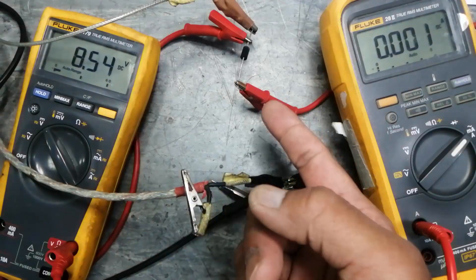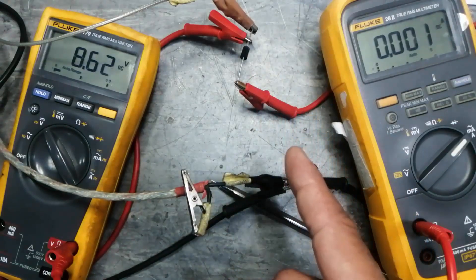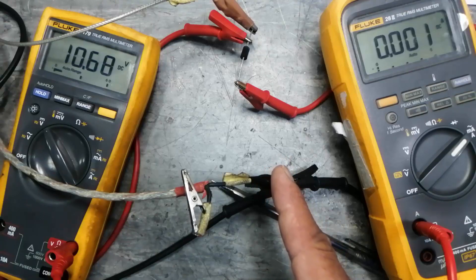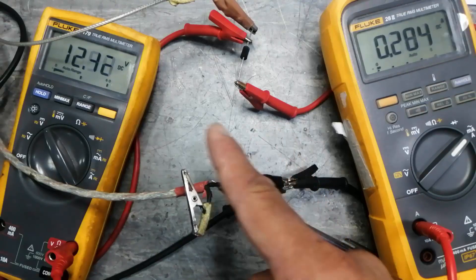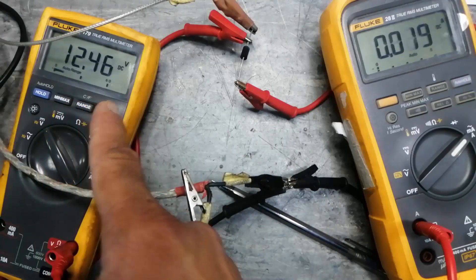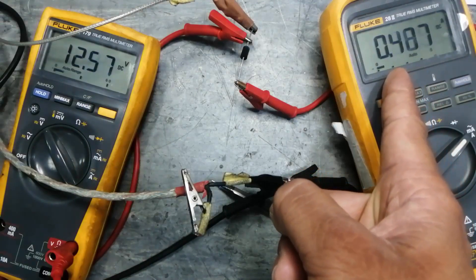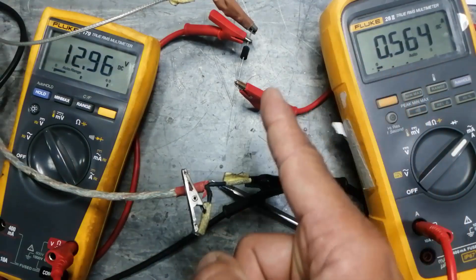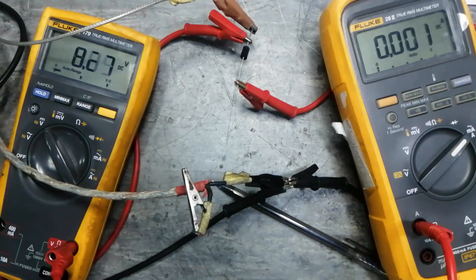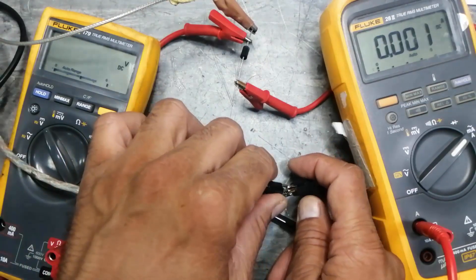If it is a 15 volt TVS, it will start conduction after 15 volts and remove all the spikes from that voltage. We can see after 12 volts it will start to conduct, and it can suppress 1500 watt spikes.